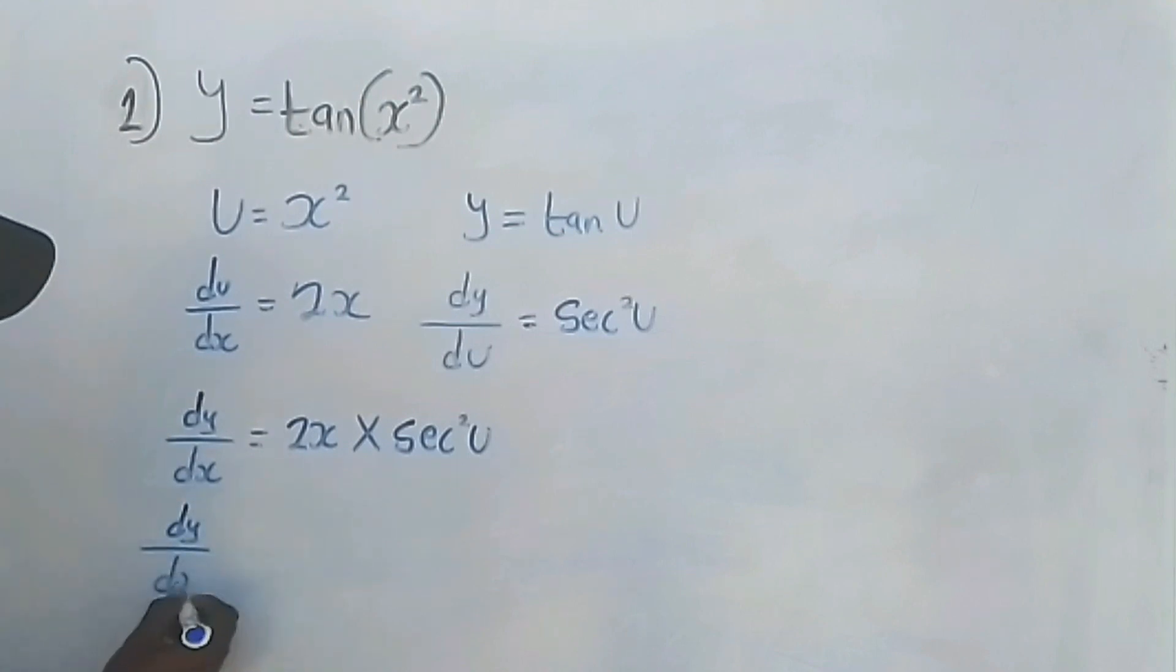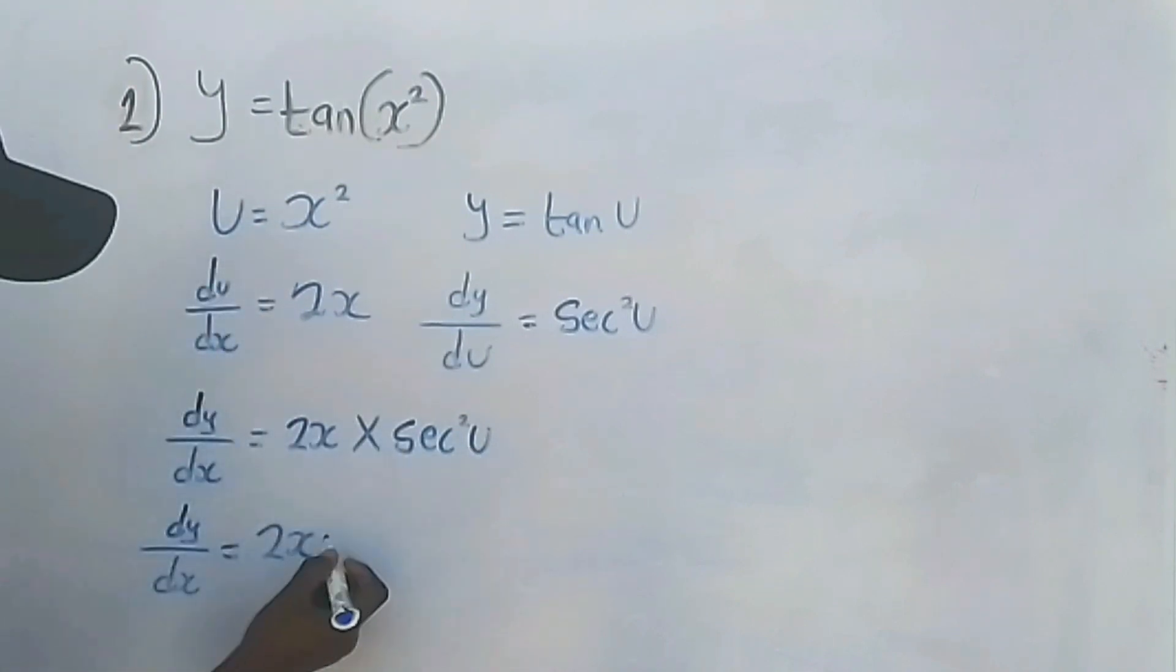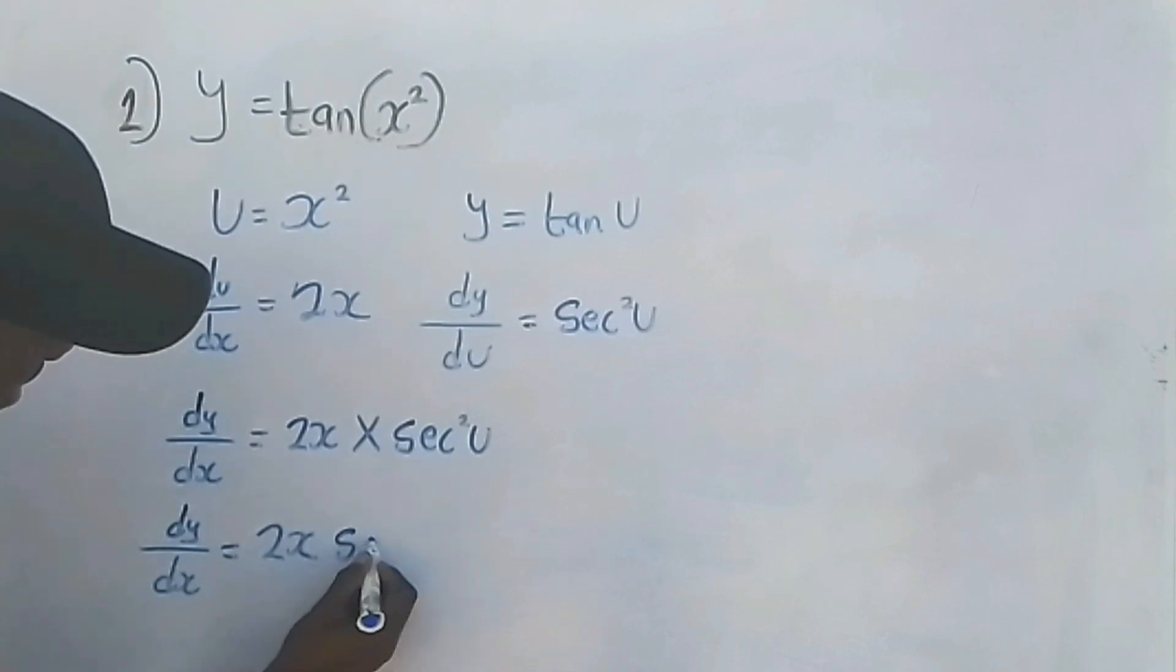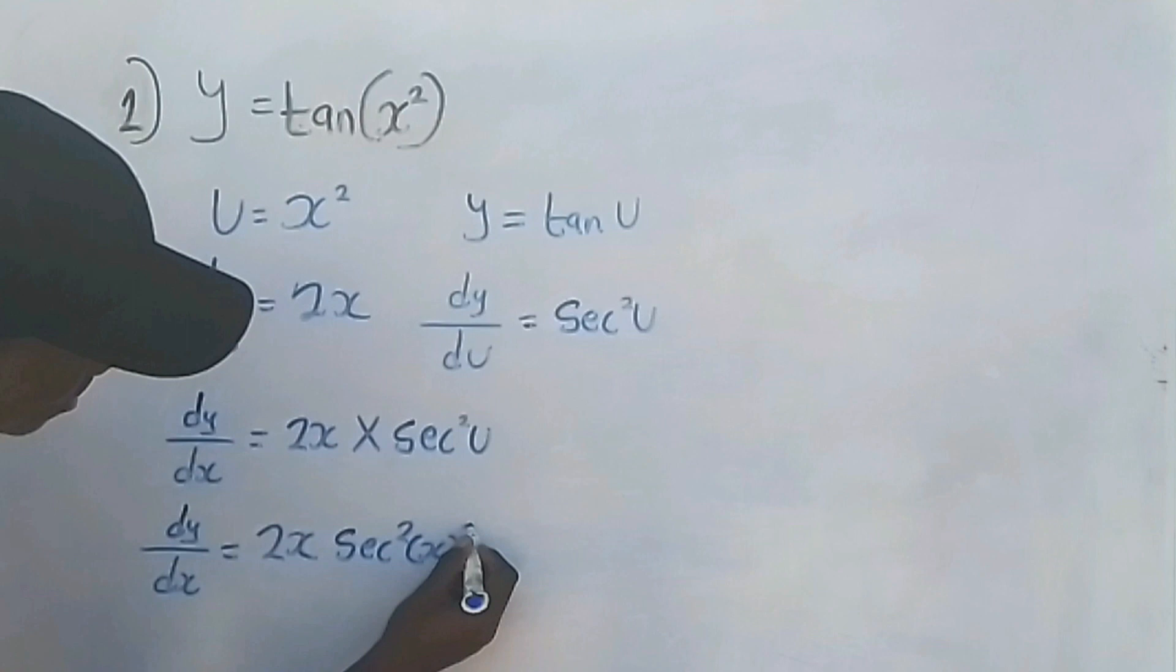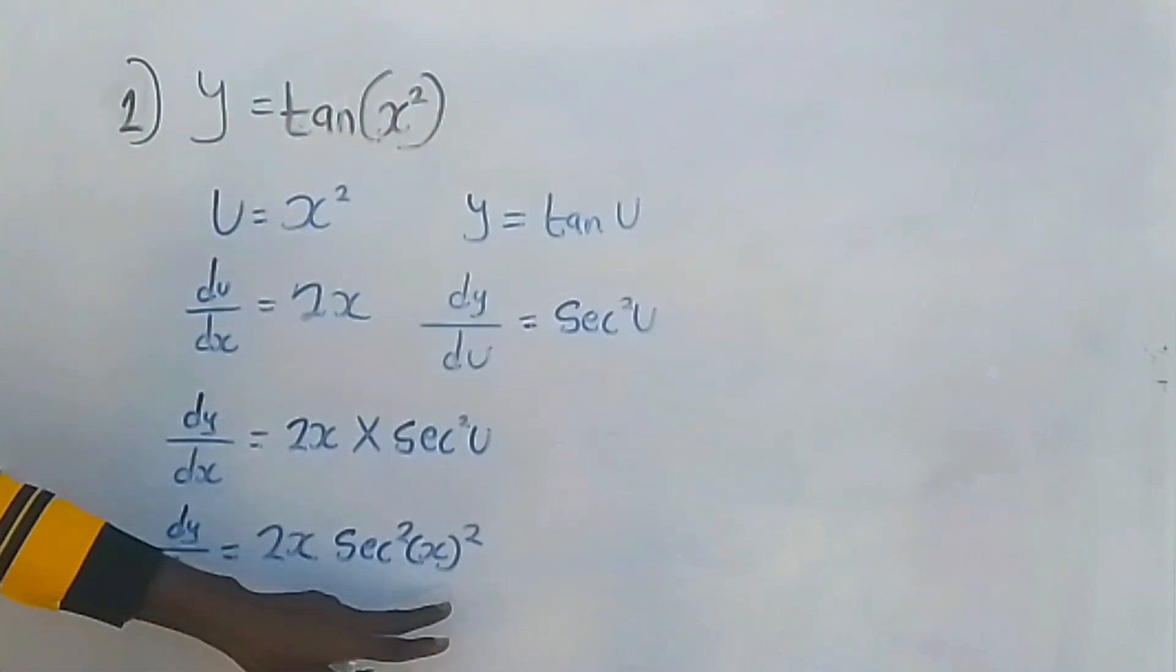equals 2x... Don't forget that u equals x squared, so we have 2x sec squared x squared. So the derivative of y equals tan(x squared) is 2x sec squared x squared.